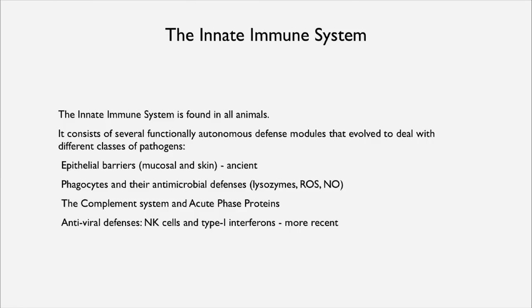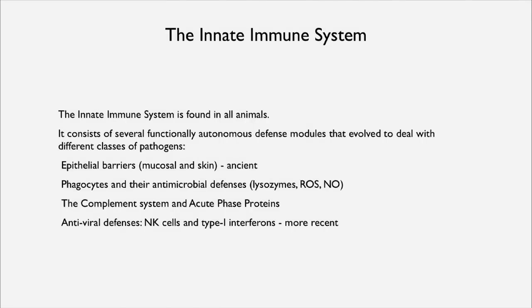It also has antiviral defenses: natural killer cells, NK cells, and type 1 interferons. Those evolved a bit more recently than some of the more ancient components, but you can find these in flies, worms, and many invertebrate organisms. They all have an innate immune system, which can be very complicated, and it is obviously effective because invertebrates are doing just fine — they are surviving pathogen attack all the time.